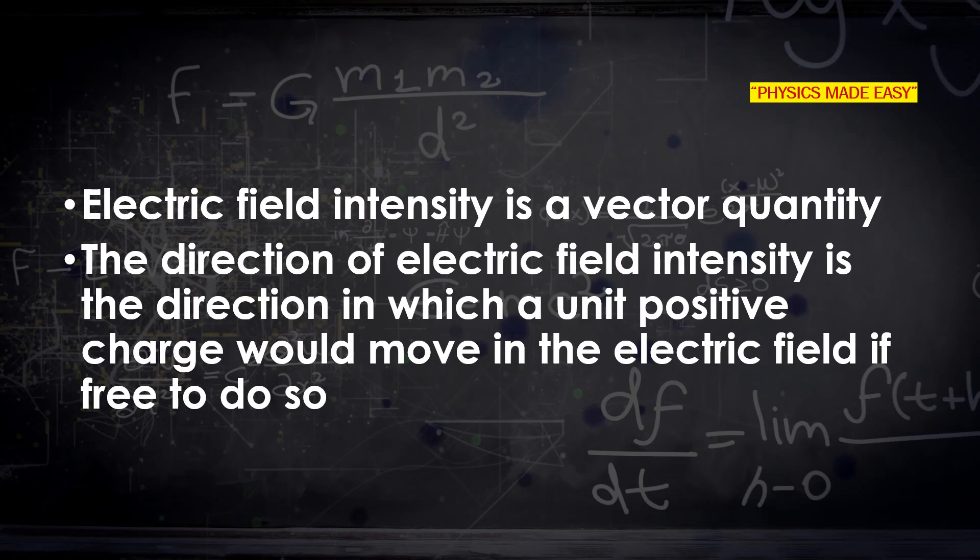We all know that force is a vector quantity, so the electric field intensity is also a vector quantity. The direction of electric field intensity is the direction in which a unit positive charge would move in the electric field if it is free to do so.